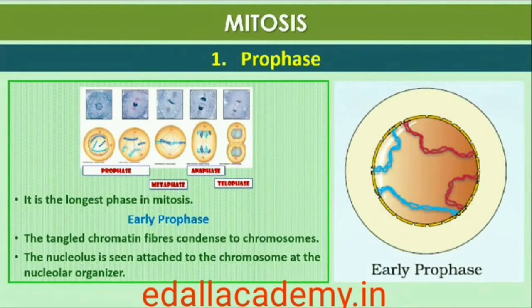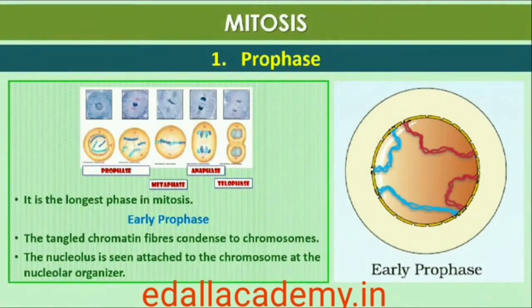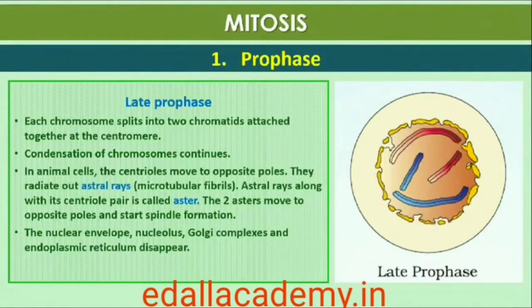Prophase, which is the first stage of mitosis, follows the S and G2 phases of interphase. In the S and G2 phases, the new DNA molecules formed are not distinct but intertwined. Prophase is marked by the initiation of condensation of chromosomal material, and the chromosomal material becomes untangled during the process of chromatin condensation. The centriole, which had undergone duplication during S phase of interphase, now begins to move towards opposite poles of the cell.